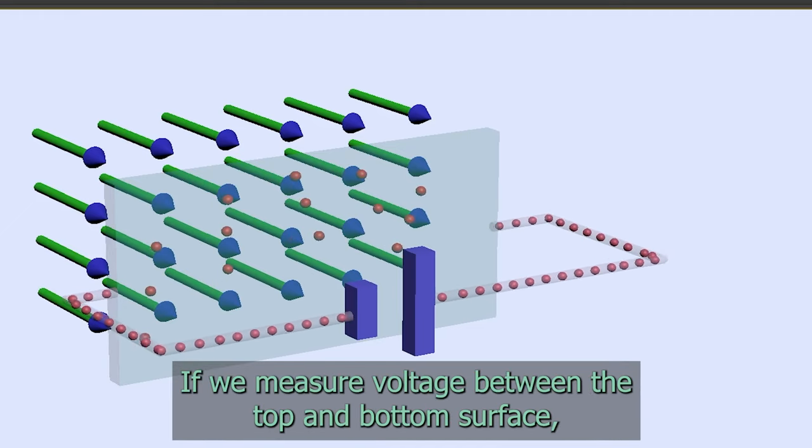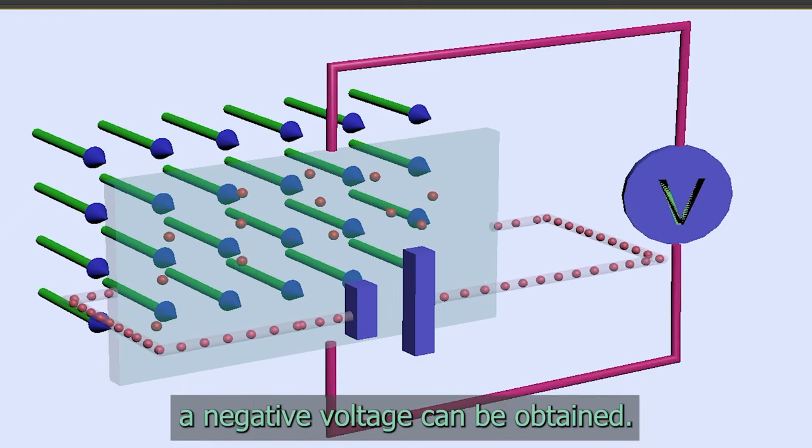If we measure voltage between the top and bottom surface, a negative voltage can be obtained.